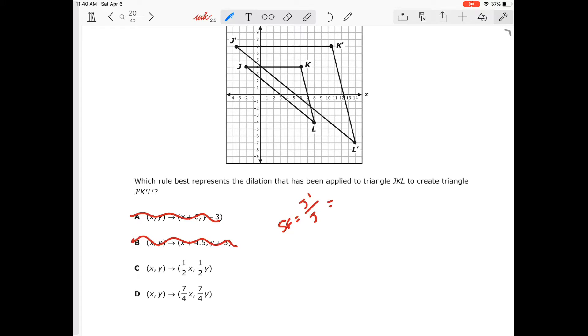So now j prime, let's see, I'm going to look at that coordinate point. And j prime, that's a bad one to use. Let me find one that's a nice even point. L. Both L. Both of the L. So L prime over L. So L prime is at the coordinate point (14, -7), and L is at (8, -4). So I'm going to take 14 divided by 8, and that will give me my answer choice D.